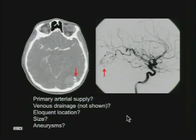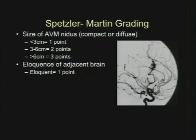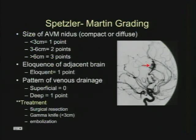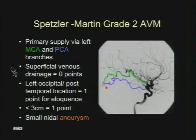These findings are important for treatment planning and prognosis, and to assign the Spetzler-Martin grade, which is based on the size of the AVM, whether it's in eloquent brain, and the pattern of venous drainage. You can see an AVM coming off the MCA branches with superficial drainage up to the superior sagittal sinus. Ours was a Spetzler-Martin grade 2. The MCA branches are highlighted in green, the PCA branch in blue, and here's the small intranidal aneurysm.